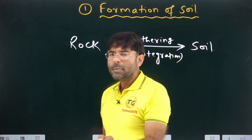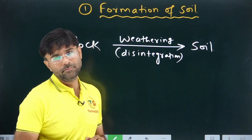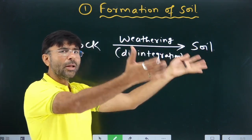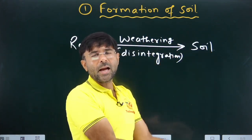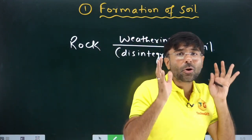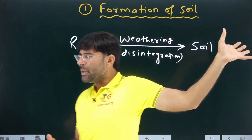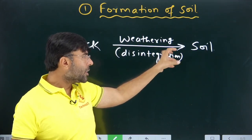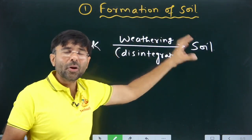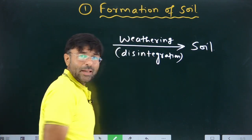The soil is obtained due to the weathering or disintegration of the rock. Theoretically it seems a very simple thing — there was a rock, it got disintegrated, and I got soil. But in nature, this is actually a very complex phenomenon. On board theoretically I can say it is simple, but in nature this process is very complex. Why? Because after disintegration, there are some further processes that must be occurring.